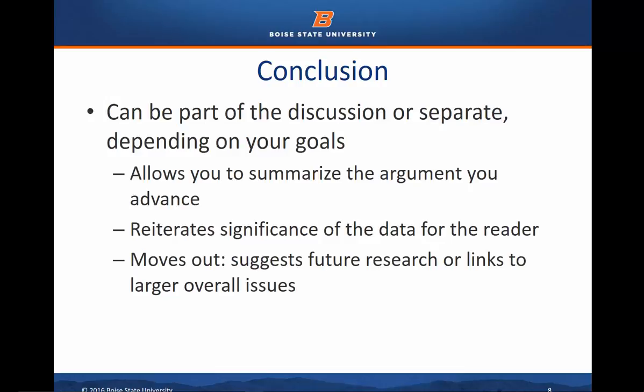A conclusion allows you to summarize the argument you advance — what you are trying to prove through your report — and to reiterate the significance of the data and your interpretation of it. It hits on that 'so what': why is this important, why does it matter, who cares? Finally, it moves outward by connecting to larger overall issues in the field, suggesting a path for future research. You might say, 'we didn't look at this in particular — future research might examine this issue further.' Or you connect it to bigger issues you don't necessarily address in the report but that are important to the reader, allowing you to reiterate your argument and further persuade.